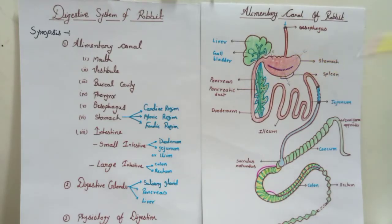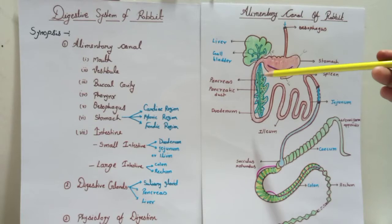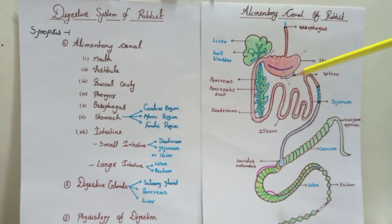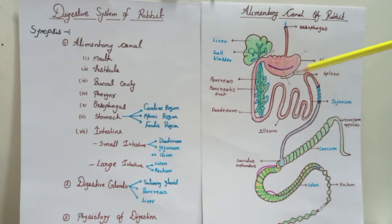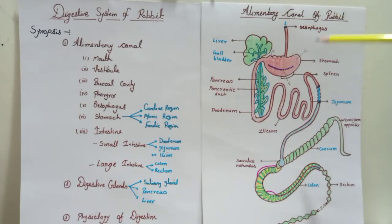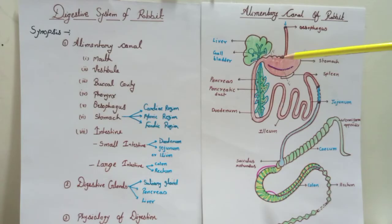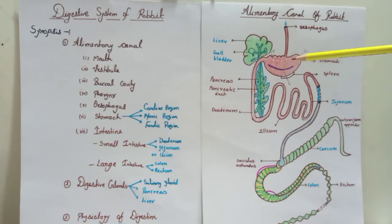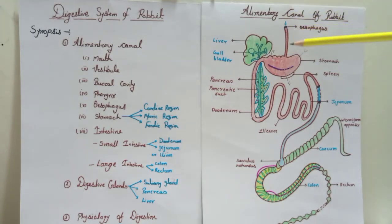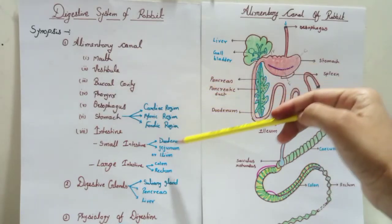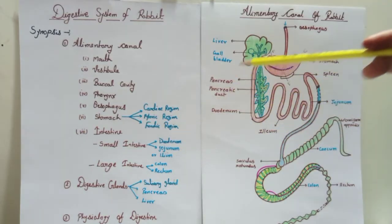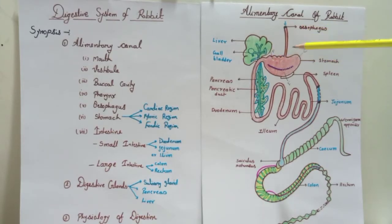The pancreas has a pancreatic duct to secrete the pancreatic juice. In the duodenum there are four layers: serosa layer, muscularis layer, submucosal layer, and mucosal layer. In the submucosal layer there are Brunner's glands, which secrete mucus to protect the internal lining from acid. The mucous membrane also secretes mucus. So mucus is secreted from the duodenum.